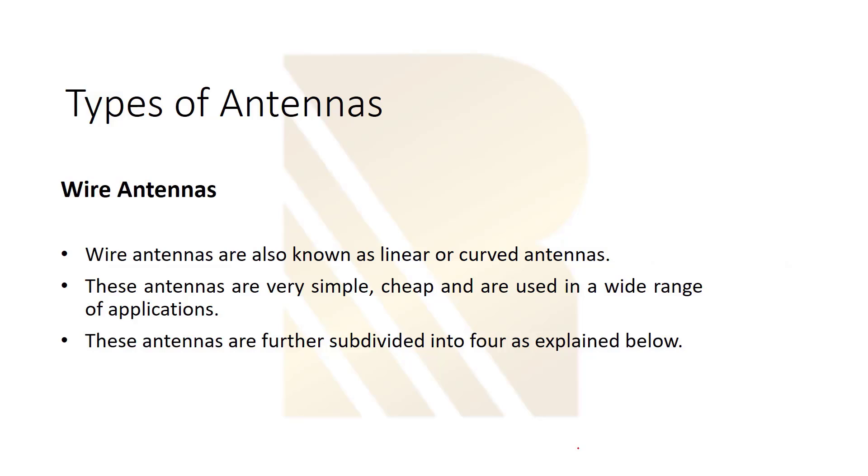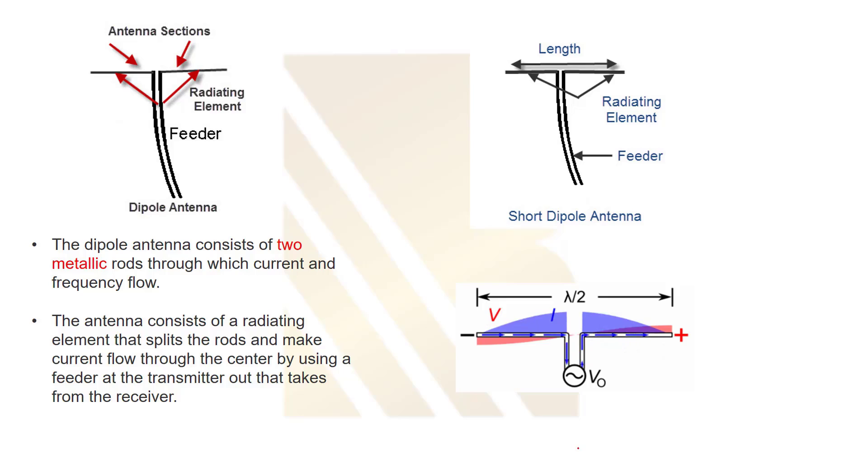The second type is wire antennas. They're also known as linear or curved antennas. They're simple, cheap, and we use them in wide range of applications. We divide them into groups. The first one is dipole antenna, the second one is short dipole antenna. We can assume they're kind of same, they have the same structure. It's like the wire going here and it's connected to AC source, as you see in this movie. And then it's connected to two metals, which is called radiating element, as you see here.